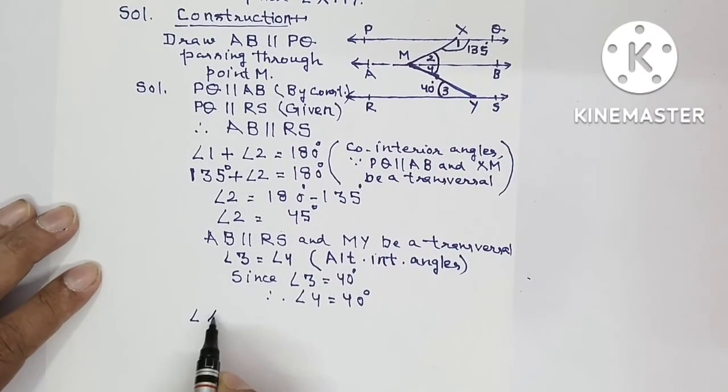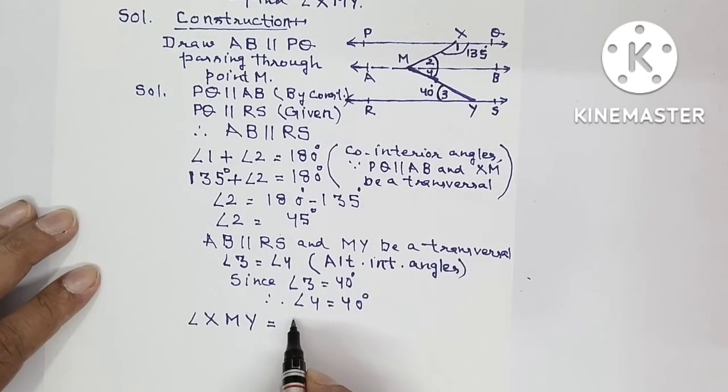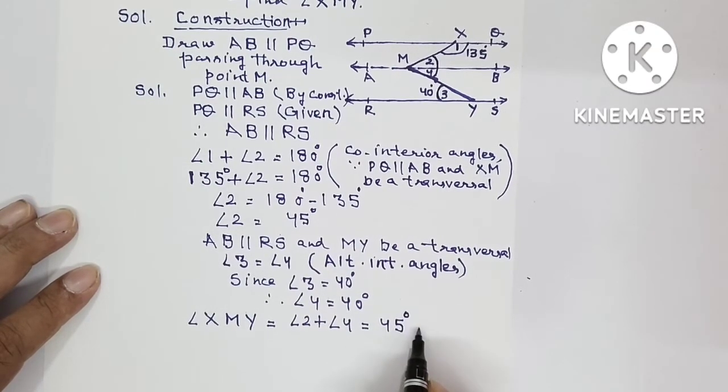So we will write angle XMY - it is the combination of two angles, one is angle 2 and one is angle 4. So this is angle 2 plus angle 4. Angle 2 we have found is 45 degrees and angle 4 is 40 degrees, so this is collectively 85 degrees.